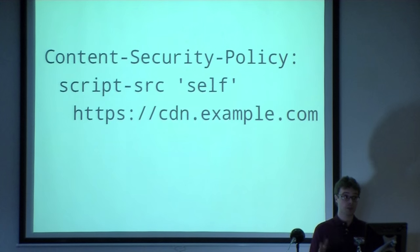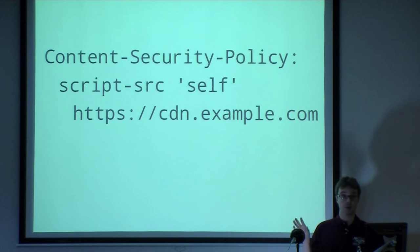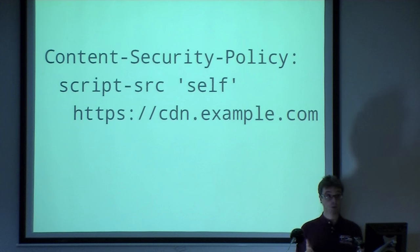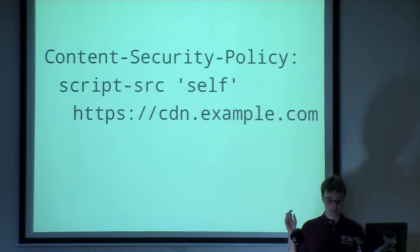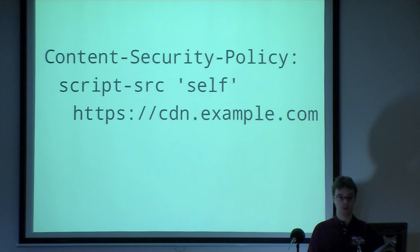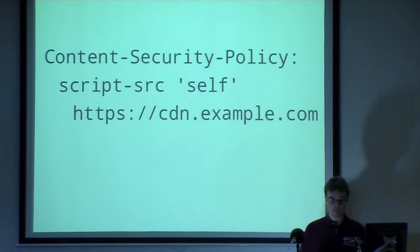CSP is a header called Content-Security-Policy. You can define the things that are allowed to get loaded from that webpage. Here, for example, we're defining a directive called script-src, which lists all of the allowed sources for scripts. 'Self' is the website itself — the current URL. We also add the CDN here. So that page can load scripts from both of these places, but nothing else. Inline scripts are right out. You can control all of these things with CSP — images, style sheets, videos, etc.